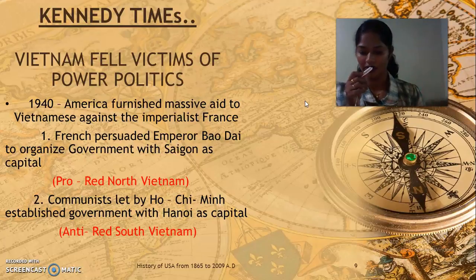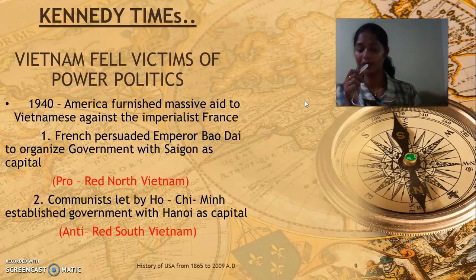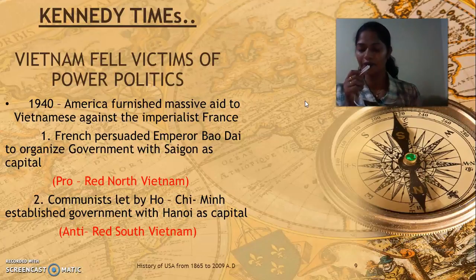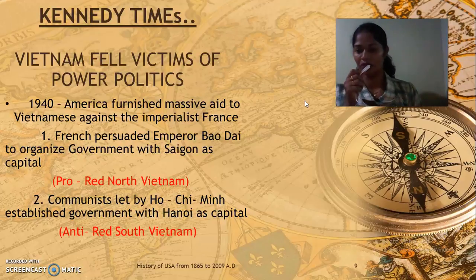Before America's involvement in Vietnam's issue, there was already an imperialist regime ruling Vietnam — France. In 1940, America furnished massive aid to the Vietnamese against imperialist France, wanting to push France out so they could enter. The French, however, persuaded Emperor Bao Dai to organize a government with Saigon as its capital, thus balancing the anti-French feeling. Bao Dai established his government in North Vietnam, and as a strong believer of communism, the North Vietnam area ruled by him was called pro-red Vietnam.